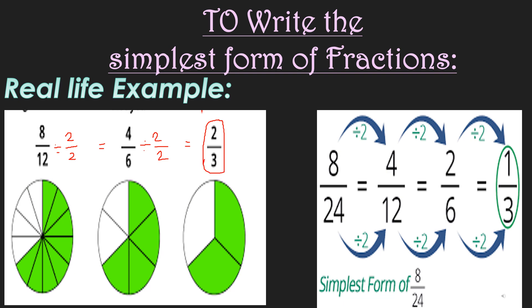Another example: find the simplest form of 8/24. Both 8 and 24 have common factor 2. Divide by 2: 8÷2 = 4 and 24÷2 = 12, giving 4/12. Again, 4 and 12 have common factor 2. Divide again: 4÷2 = 2 and 12÷2 = 6, giving 2/6. Again, 2 and 6 have common factor 2. Divide once more: giving 1/3. So the simplest form of 8/24 is 1/3.